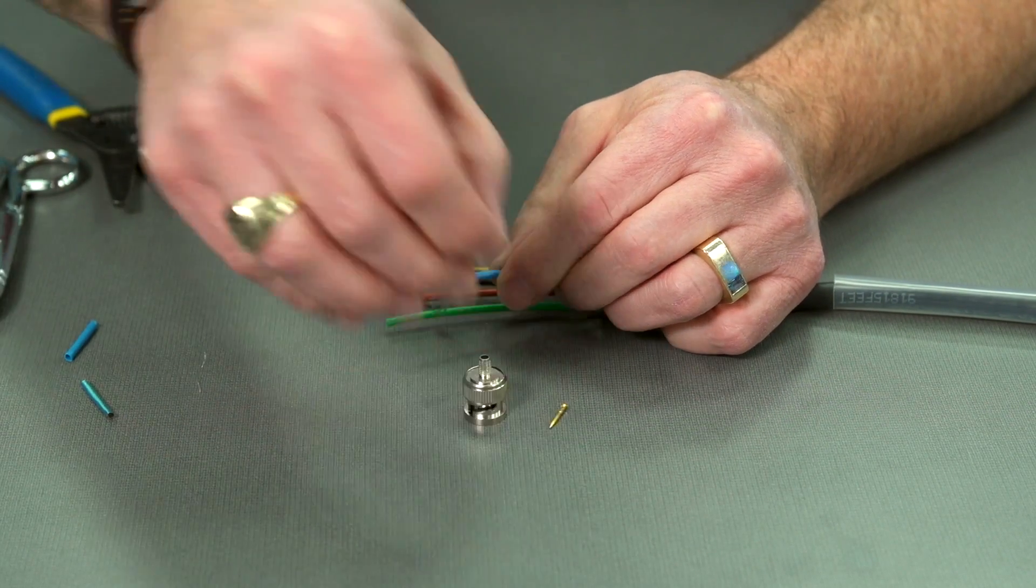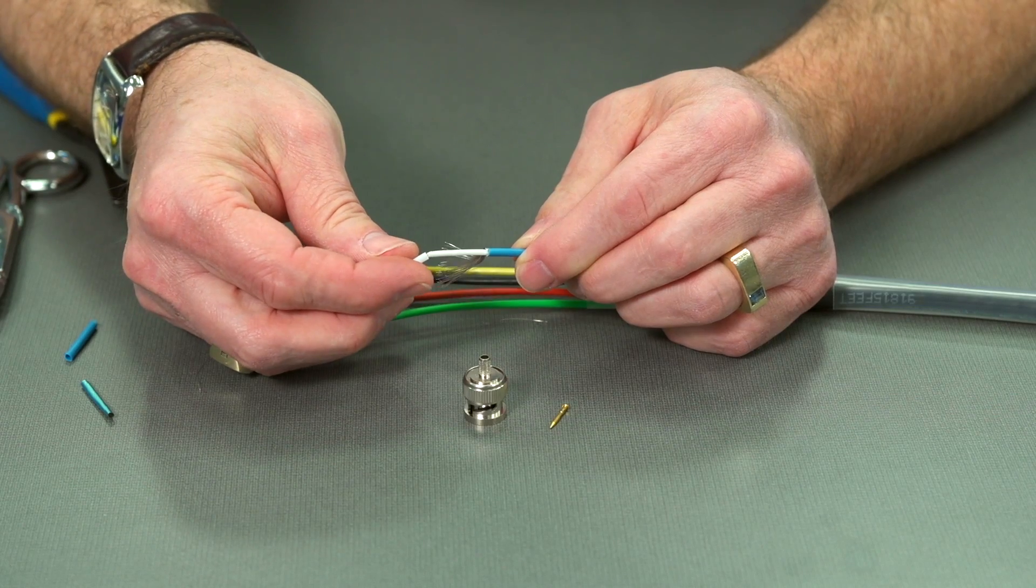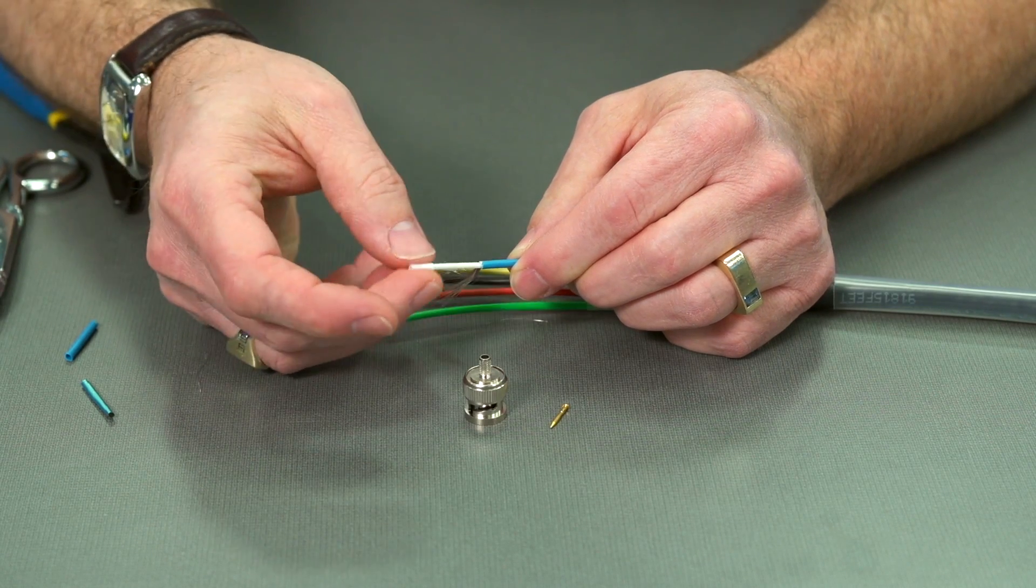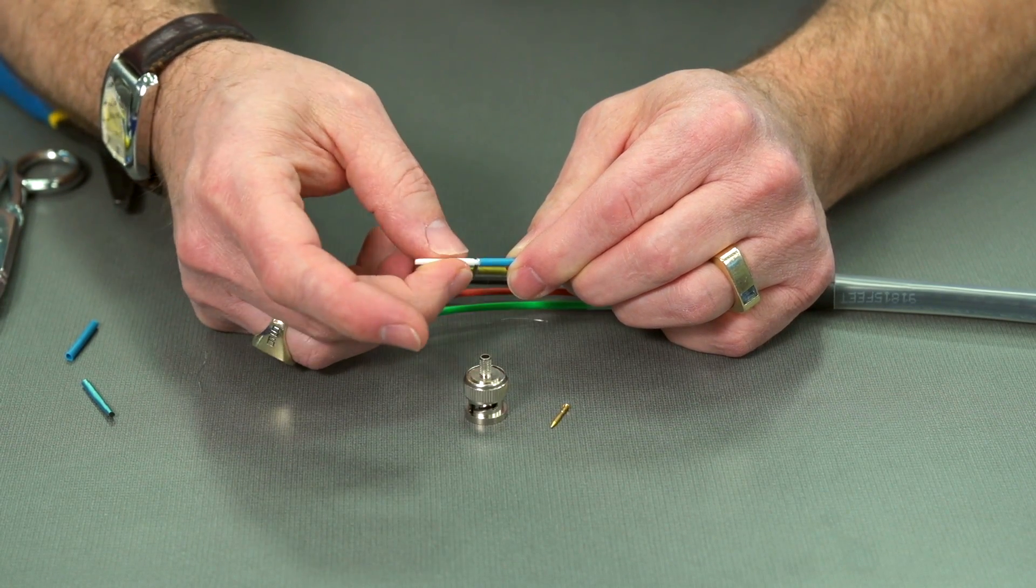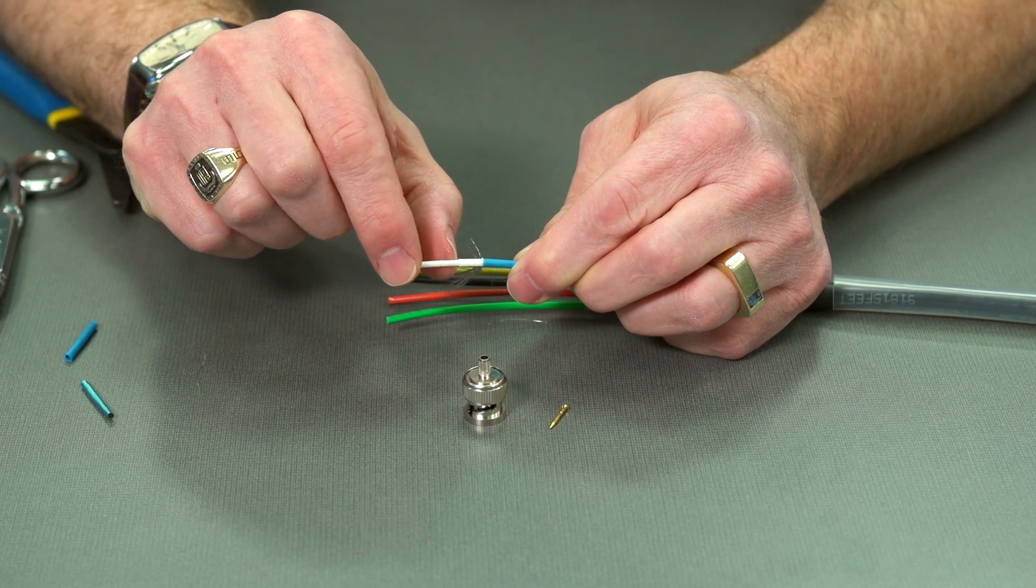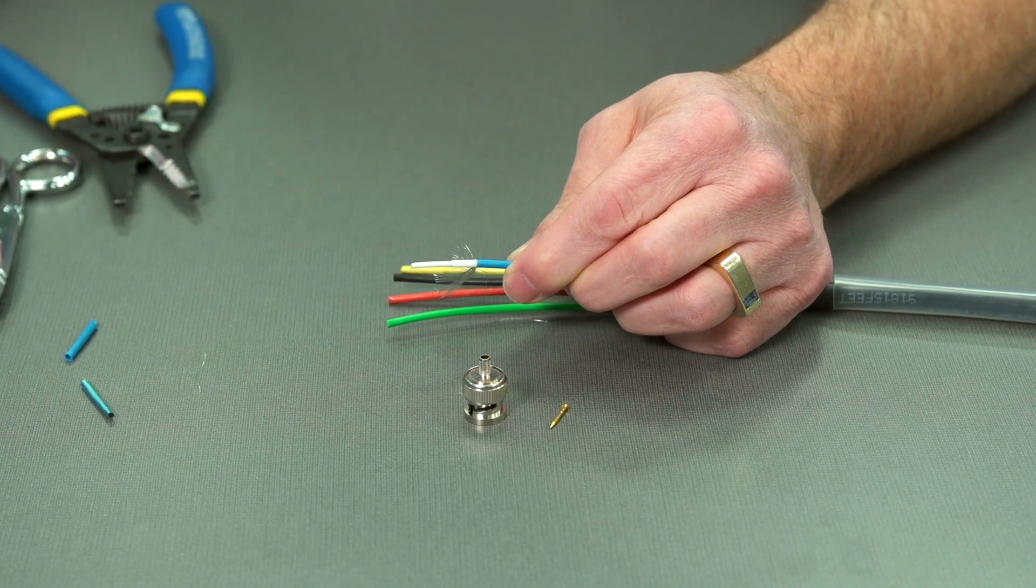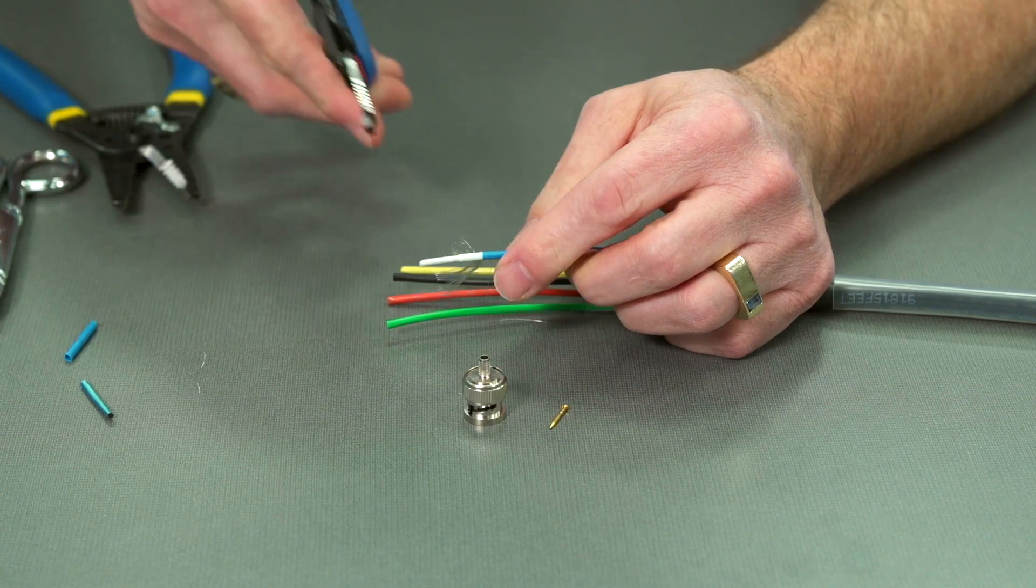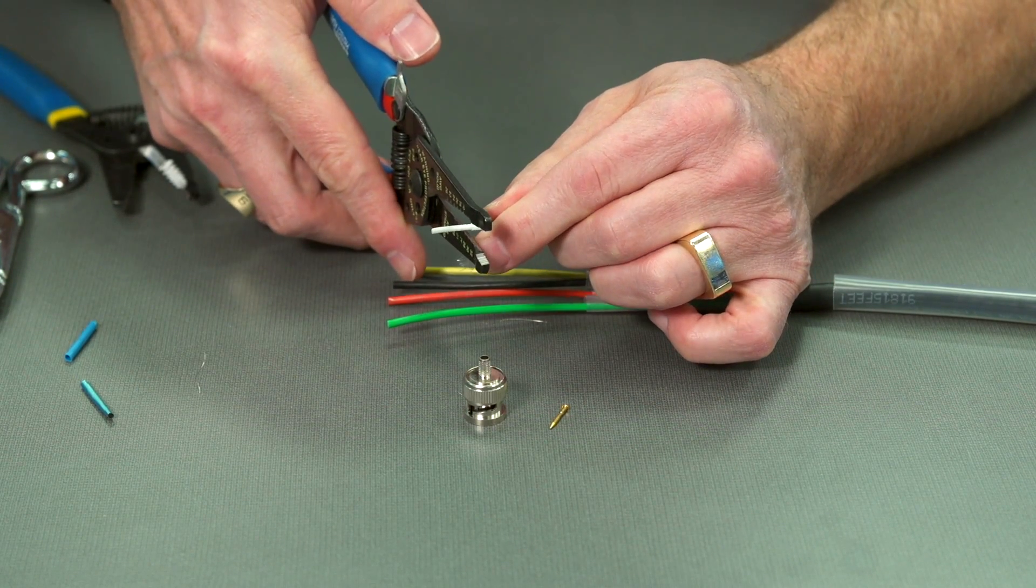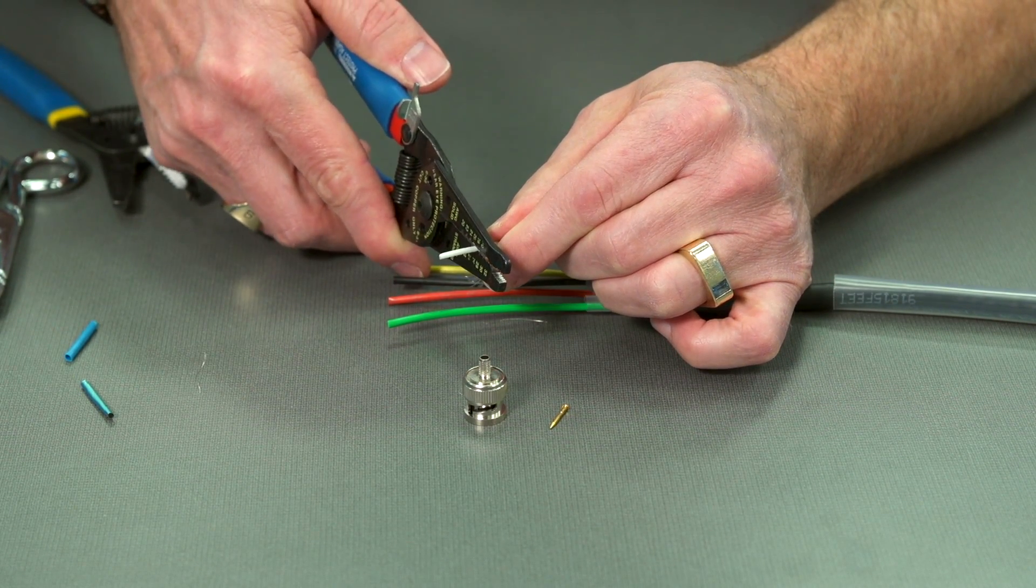Now, the next piece is this white spacer, and that goes on. This spacer is going to show us where we're going to strip this. So we get our strip tool here and strip it right there.